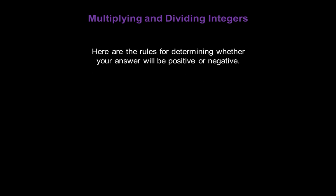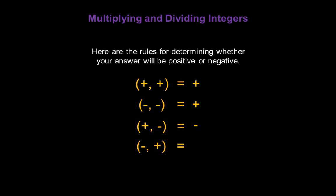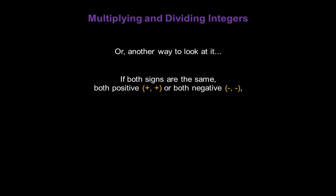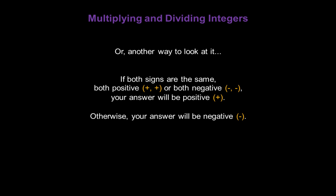Here are the rules for determining whether your answer will be positive or negative. If the first number is positive and the second number is positive, the answer will be positive. If both numbers are negative, the answer will also be positive. If one number is positive and the other is negative, the answer will be negative. In short: if both signs are the same, the answer is positive; otherwise, the answer is negative.